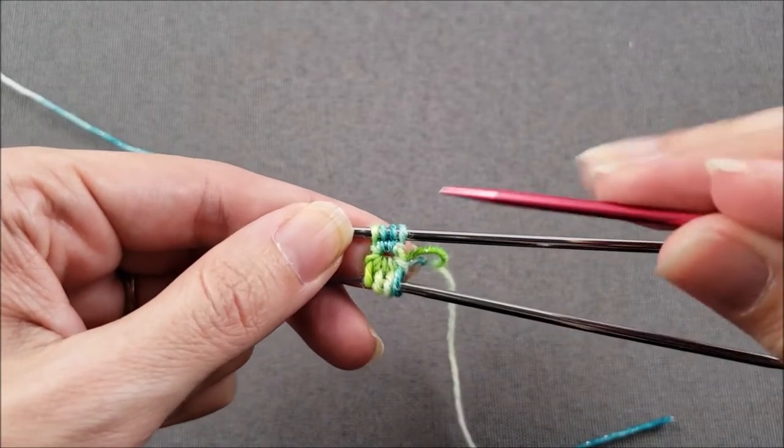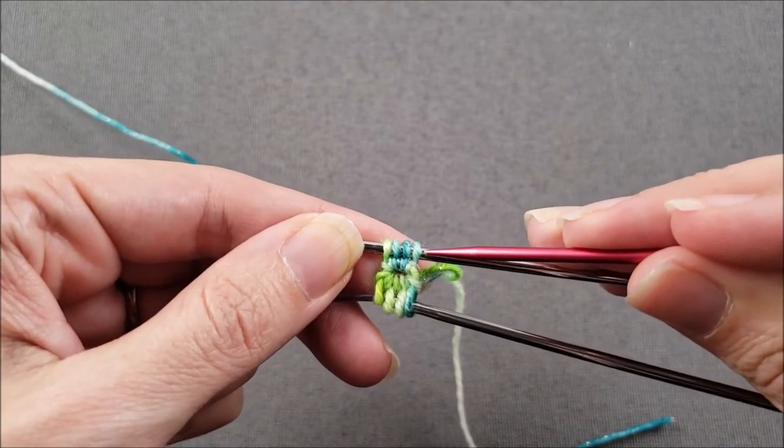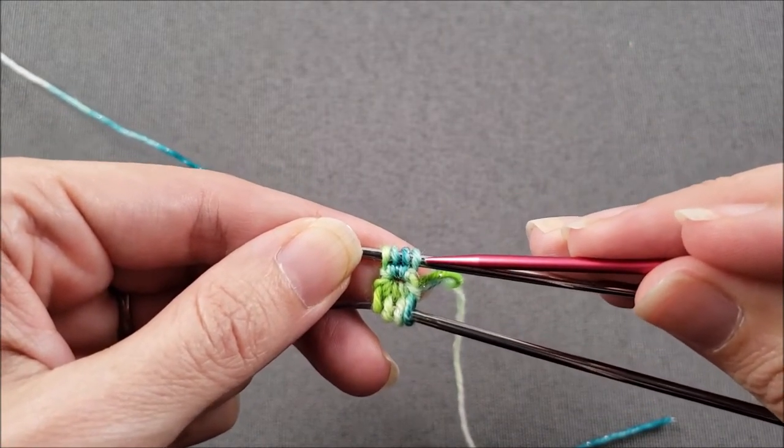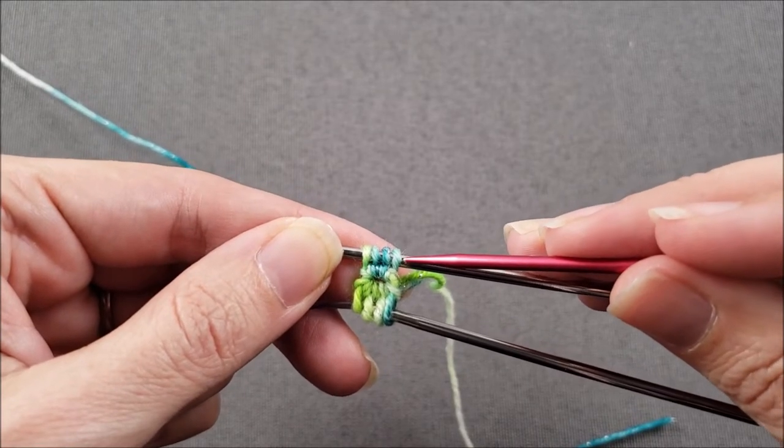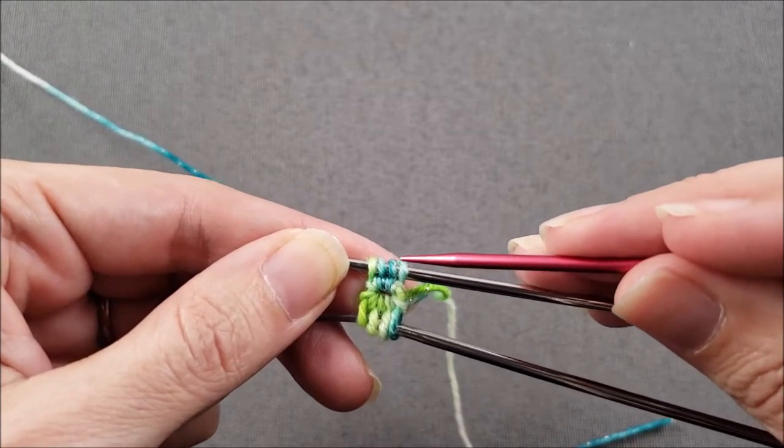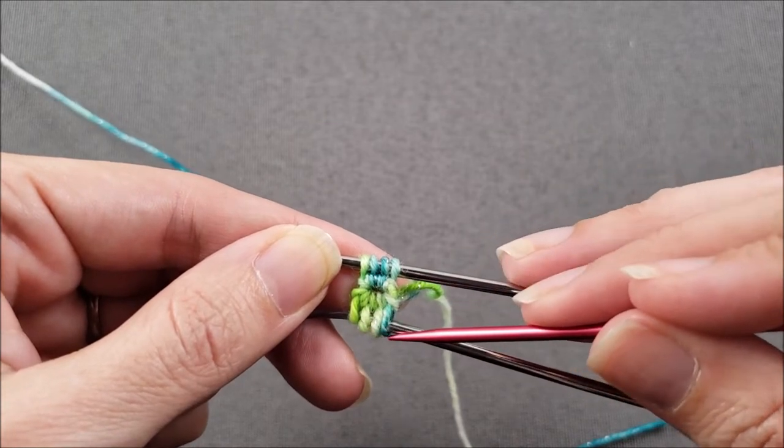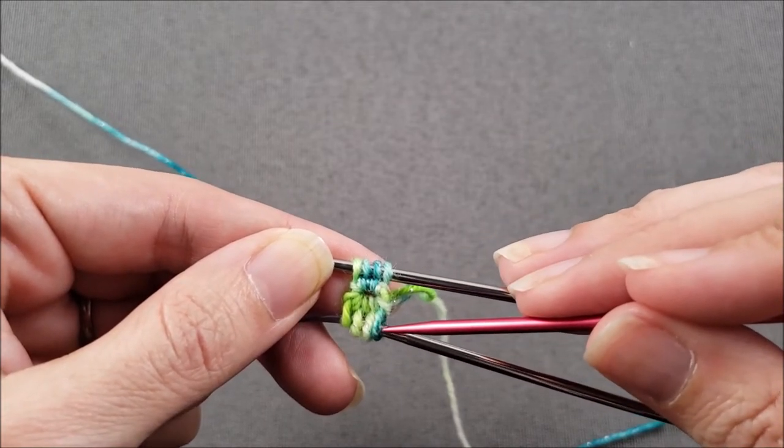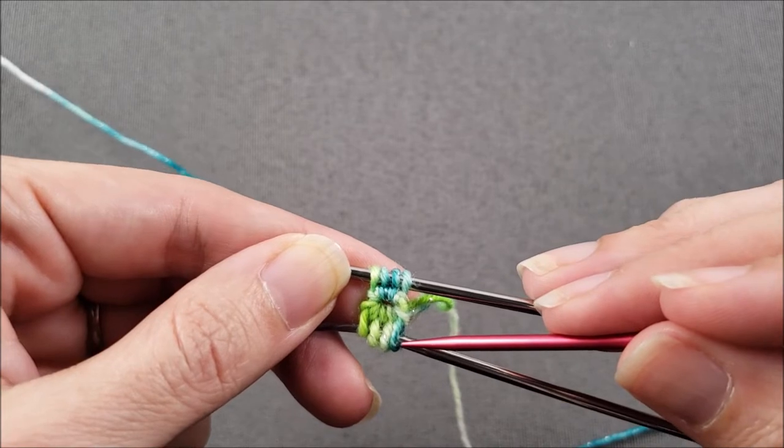And this stitch right here, this light blue one, was the first stitch that I cast on so it's going to be the first stitch that I knit and then I'll continue knitting in the round and end with this dark blue stitch which is the last stitch I cast on.